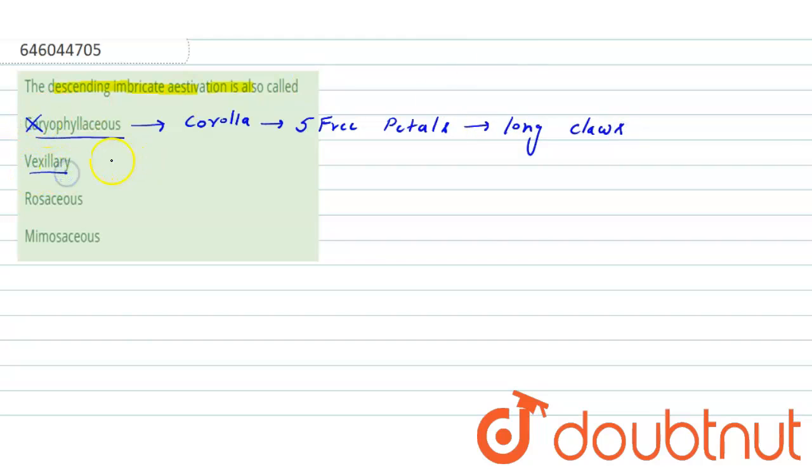The next option is vexillary. So it is a type of aestivation. Now if we talk about aestivation, it is the arrangement of sepals or petals in a flower. So this is called aestivation.